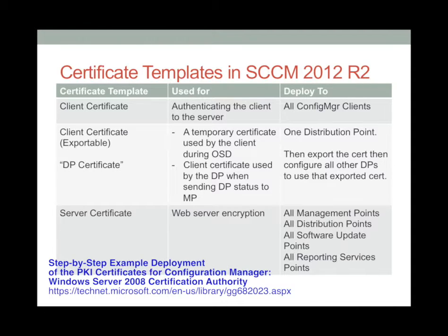Where do we deploy this? Obviously we need at least one DP certificate for every DP, but you can actually reuse the same certificate — it depends on your customer or on you whether you want to reuse the same certificate on multiple DPs. As an exportable client cert, you will enroll this certificate onto one of your distribution points or servers, then export it to a PFX file. That file is the one used during the configuration of the DP to HTTPS. That's the second certificate template.